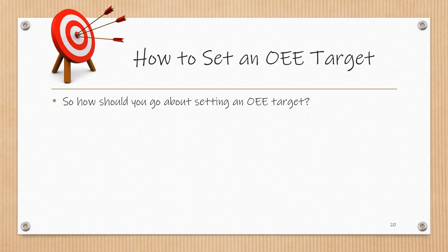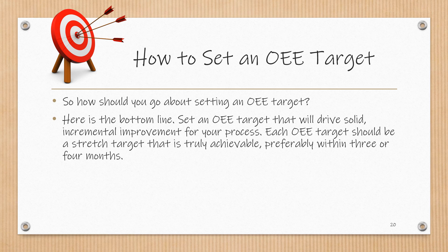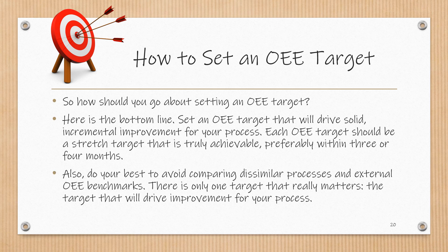So how should you go about setting an OEE target? Set an OEE target that will drive solid incremental improvement for your process. Each OEE target should be a stretch target that is truly achievable, preferably within three or four months. Do your best to avoid comparing dissimilar processes and external OEE benchmarks. There is only one target that really matters: the target that will drive improvement for your process.